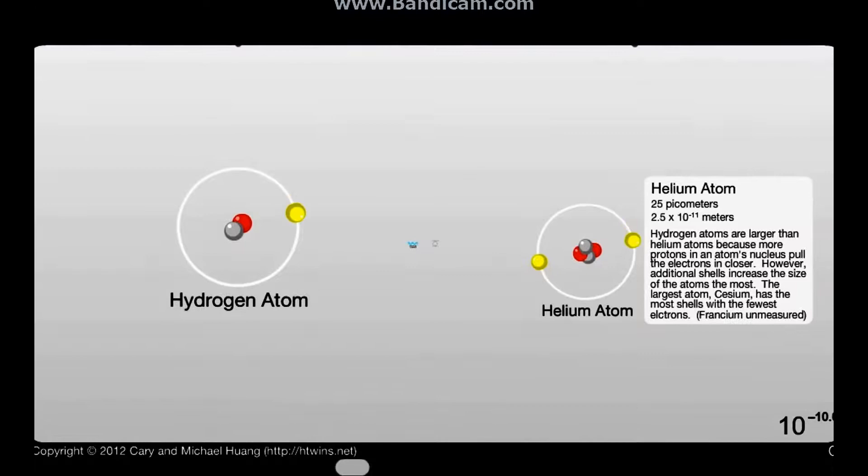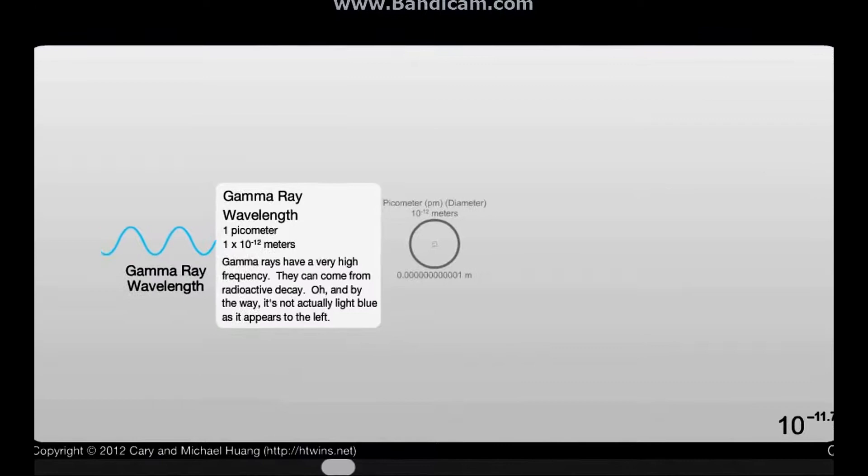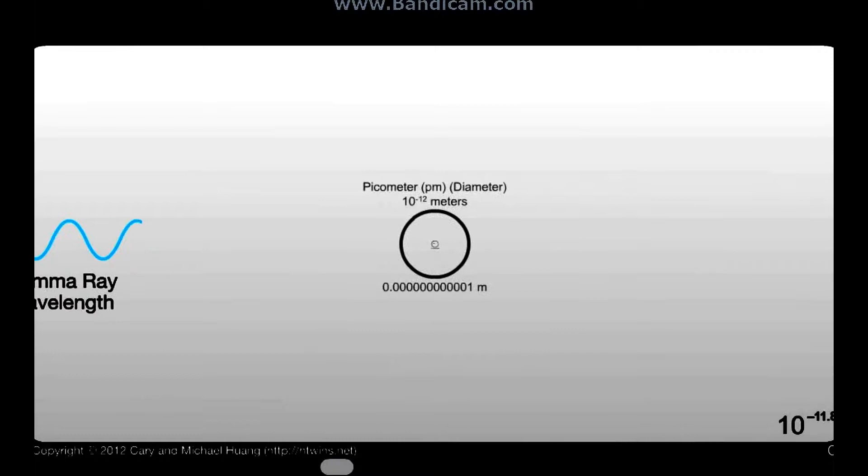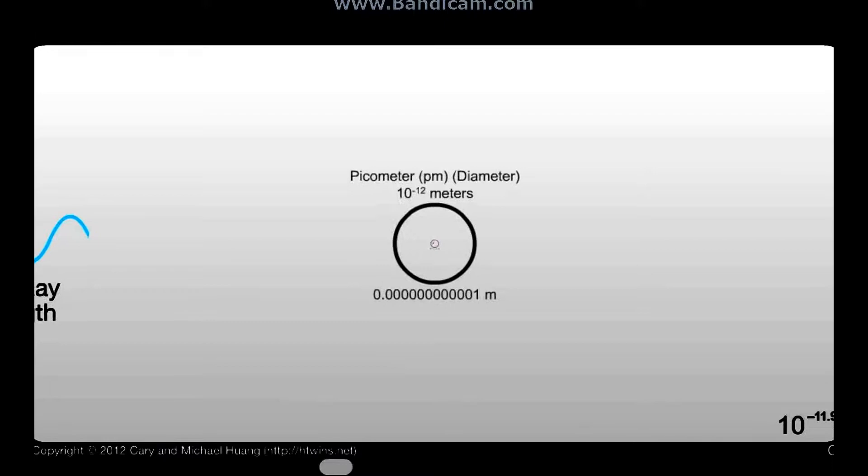What we got here? Smallest thing visible to an electron microscope. Dude, that is insane. Helium atom. Hydrogen atom. Look at the size of those. They're so tiny. What we got here? Gamma ray. And those are now visible to some computers. I can't go any smaller. Why not?